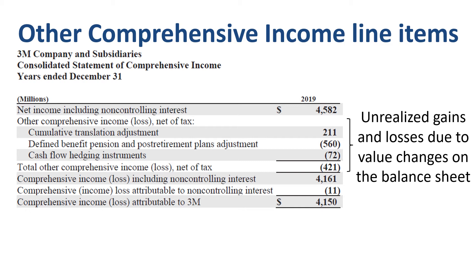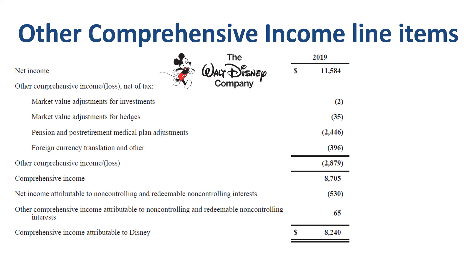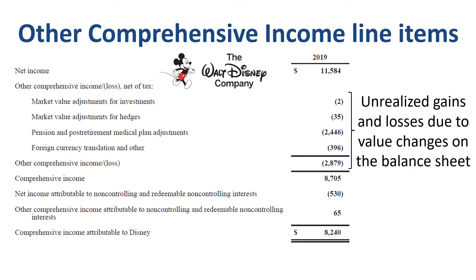When reviewing annual reports of large corporations, in many cases I found similar line items, but they are not always named in the same way. For example, Disney basically lists the same line items as 3M, but calls them market value adjustments for investments, market value adjustments for hedges, pension and post-retirement medical plan adjustments, and foreign currency translation and other.